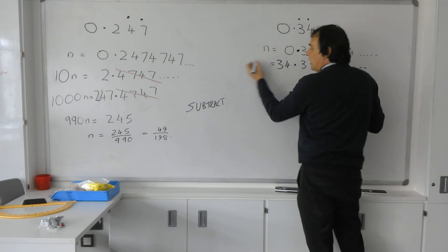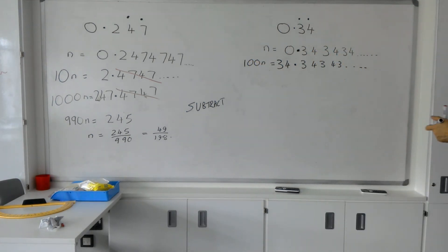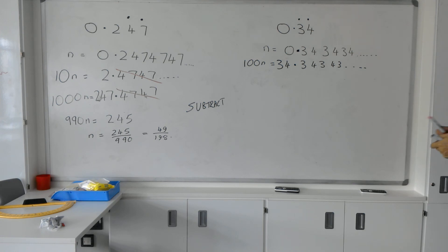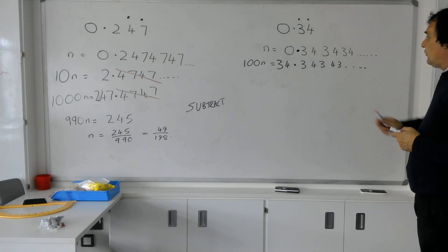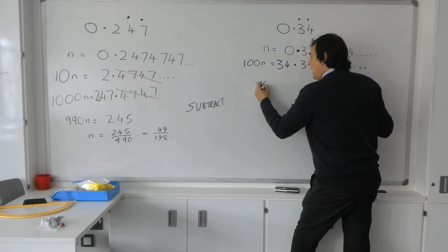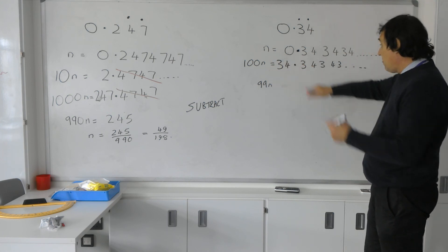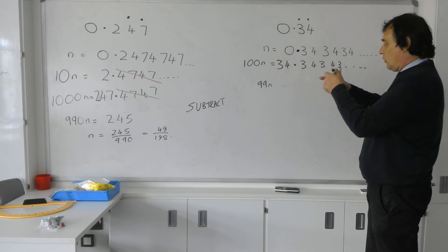I'd write it as 34.34343 and so on. That is going to be 100N—I've multiplied by 100, moved the decimal point twice. So now all I say is 99N, because I've got my 100N take away the value of 1N, which is 34 take away 0.